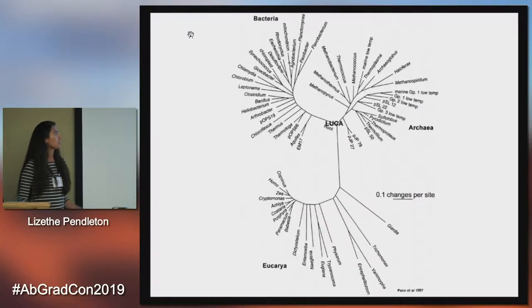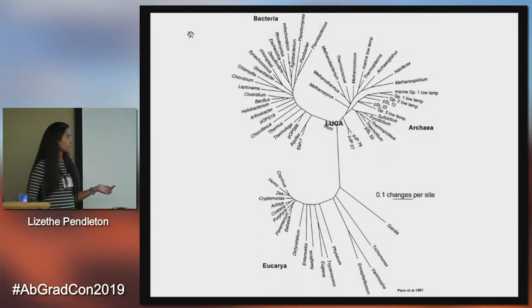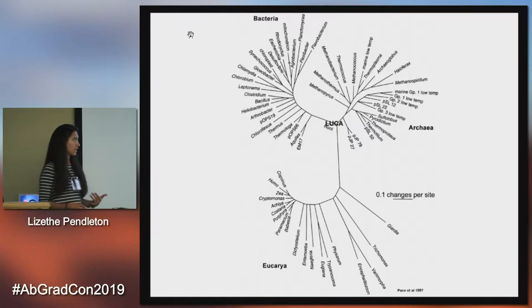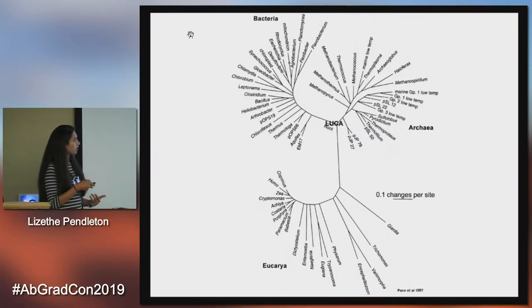This is an example of the tree of life. This is a phylogenetic tree, which is based on the sequencing of the 16S rRNA gene. And again, we have the three domains: bacteria, archaea, and eukarya.